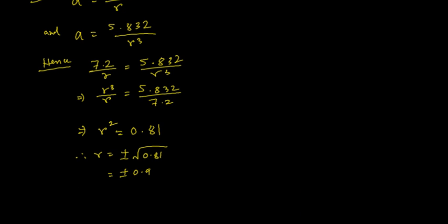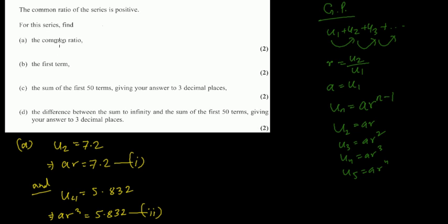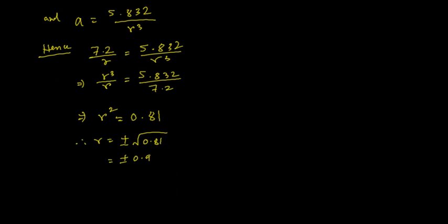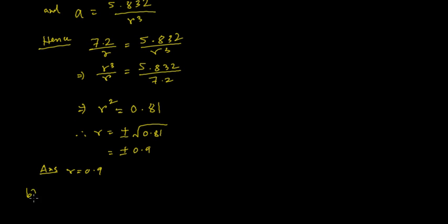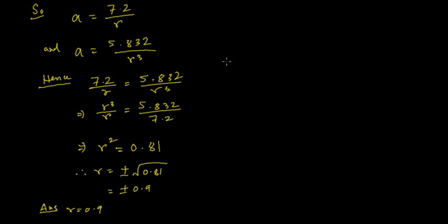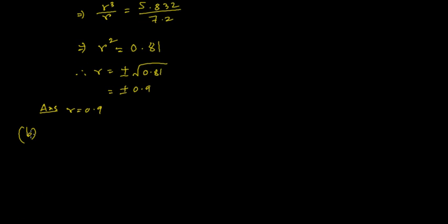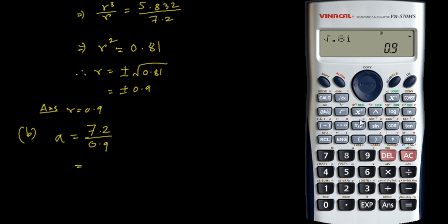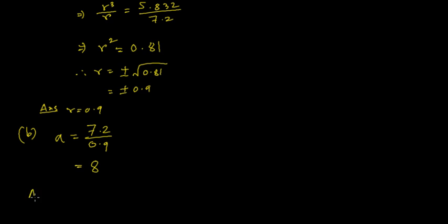It is given that the common ratio is positive, so r = 0.9. For part b, find the first term: using a = 7.2 / r, we get a = 7.2 / 0.9 = 8. So the first term a = 8.